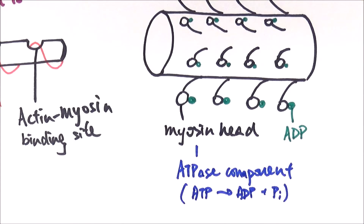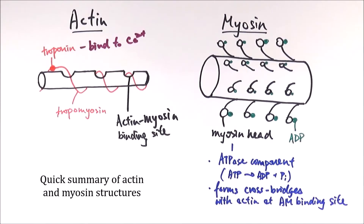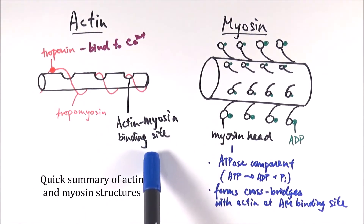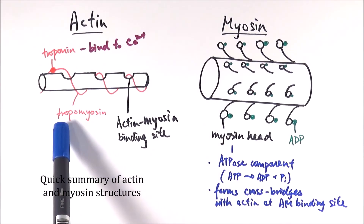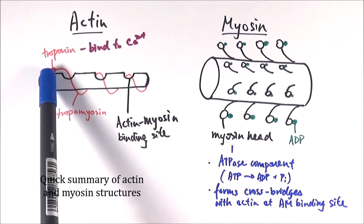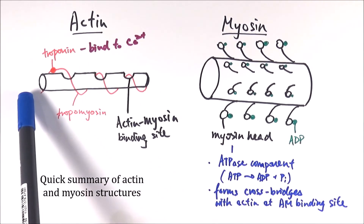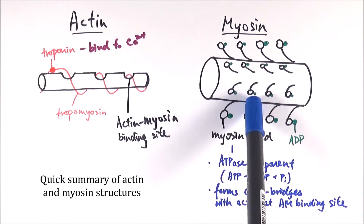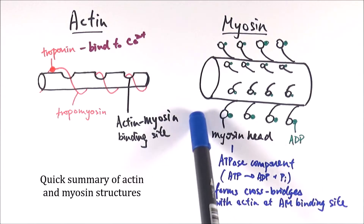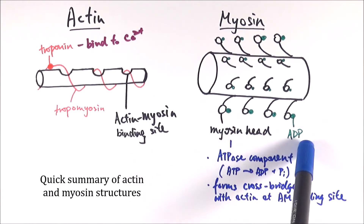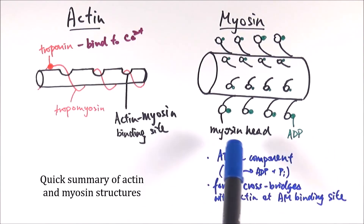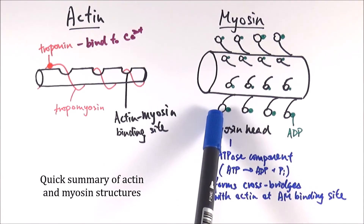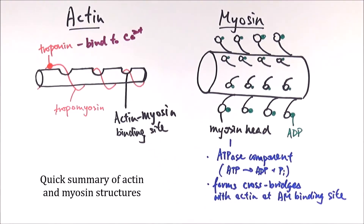Once the myosin head moves, the ADP is released and replaced by ATP depending on the situation. The myosin head also has an ATPase component — when activated by calcium ions, it hydrolyzes ATP to ADP and an inorganic phosphate, which is very important for muscle contraction. So the myosin head both forms cross bridges with the actin-myosin binding sites and has enzymatic activity to hydrolyze ATP.